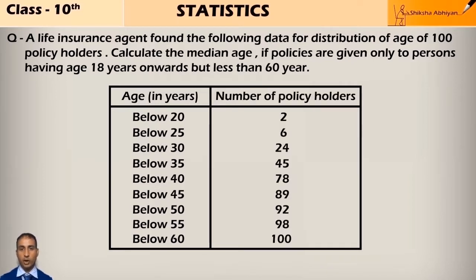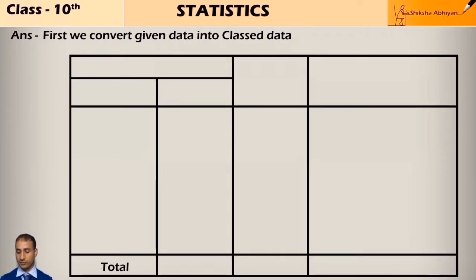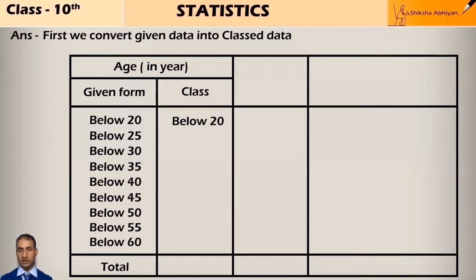As we can see, the data is of less than type data: below 20, below 25, and so on. So we will convert this data into class data. Age in years given form is below 20, below 25, below 30, below 35, and so on. The class will become: first class is below 20, but we don't know what the lower limit is.